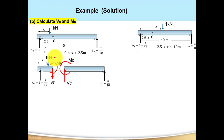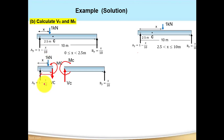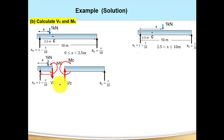You can take either the left or right section — the result is the same. My recommendation is to take the simplest section. The distance from A to C is 2.5. The unit load is at distance X from A, and Ay = 1 − X/10. For the left section: Vc is downward and Mc is counterclockwise. For the right section, Vc is upward and Mc is clockwise. This is the positive sign convention when we take the section.